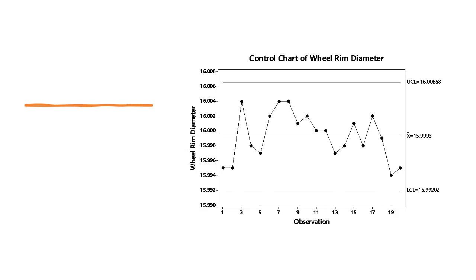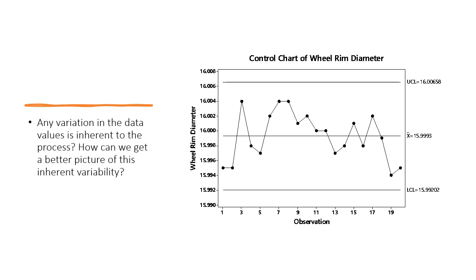Notice that the points on this chart fall randomly about the center line with no points outside of the control limits. This indicates that the wheel diameters produced by the wheel manufacturing process are consistent over time, so any variation in the data values is inherent to the process.